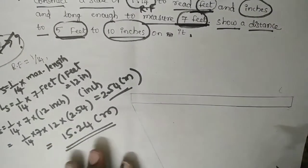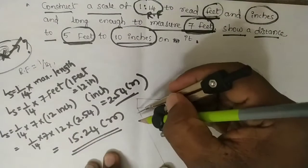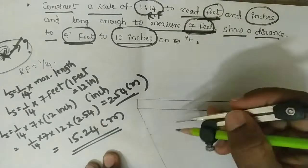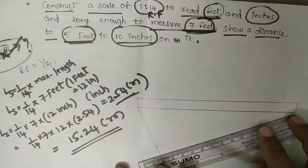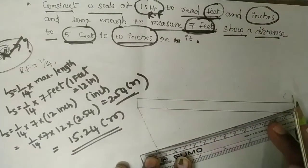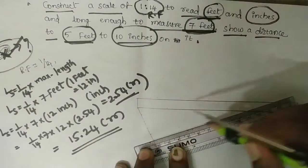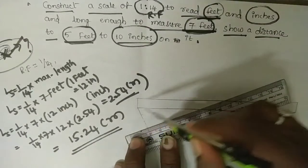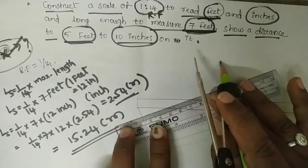After completion, divide the scale into 7 equal parts. We are taking 7 equal parts because the measure is up to 7 feet. Use the line dividing method — take any convenient radius and mark up to the 7th point. After marking, draw inclined lines parallel to each other to obtain the 7 equal parts.